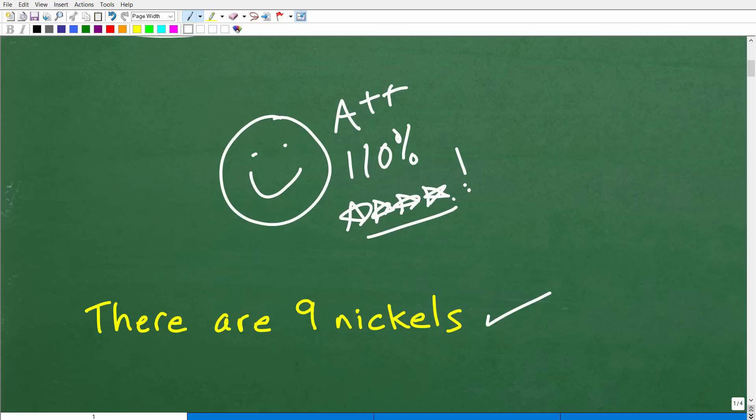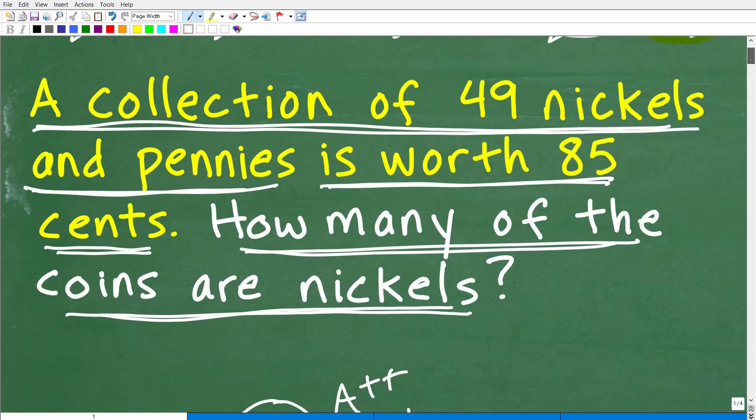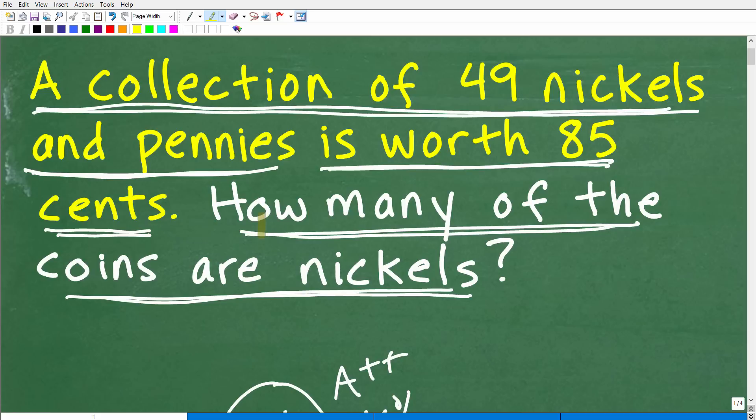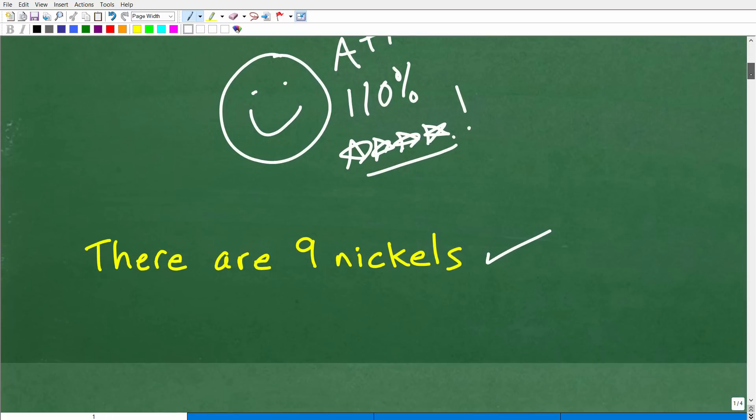Now, if you came up with a different answer and you might be thinking to yourself, hmm, I think you're wrong, Mr. YouTube math man. I did it right. You're wrong. Well, let's go ahead and take a look at the actual solution. So when you're solving any word problem, the key is you want to read the problem more than once and then you need to kind of drill in on what is the question being asked. So you got to really make sure you understand what's going on. So we have a bunch of coins. We have some nickels and some pennies. We have 49 total coins and the value of all those coins is 85 cents. But we want to know how many of those coins are nickels.